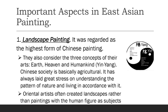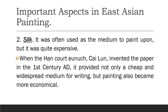Important aspects in East Asian painting. Number 1: Landscape painting — it was regarded as the highest form of Chinese painting. They also consider three concepts: Earth, Heaven, and Humankind, or the Yin Yang. Chinese society is basically agricultural and has always laid great stress on understanding the pattern of nature and living in accordance with it. Oriental artists often created landscapes rather than paintings with the human figure as the main subject. Landscape was often used as the medium to paint on a fan, but it was quite expensive.